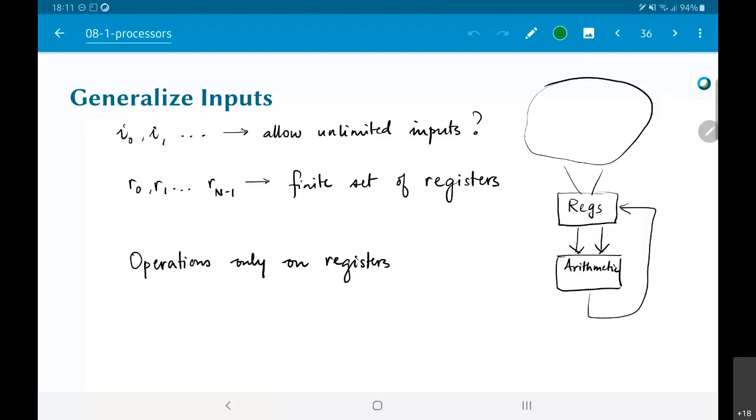Now I would like to at least be able to handle an unlimited number of inputs. If I say that I want to handle unlimited inputs and unlimited registers, I can't really think of a way to handle this. But what if I say I will fix the number of registers to be something finite? I'll see whatever is suitable for the amount of hardware that I have available to me and choose some number of registers. But it will be a finite set.